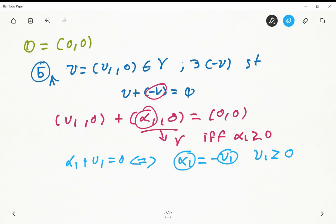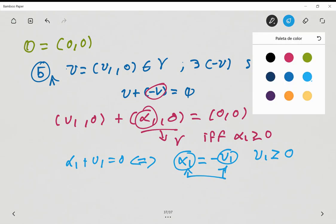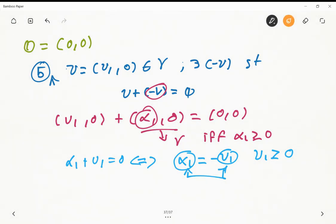And alpha_1 is also a positive number. So the only possibility that this equality holds is for alpha_1 equals to u1 equals to 0.